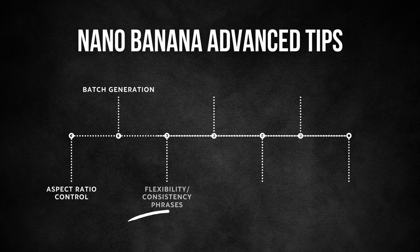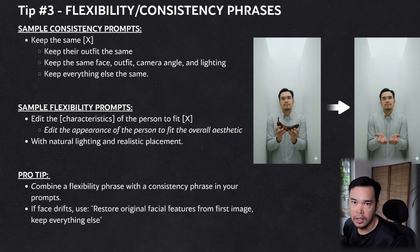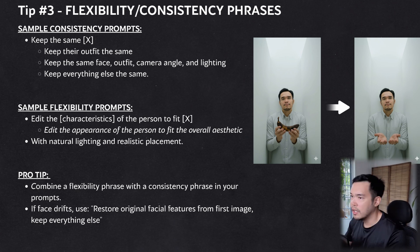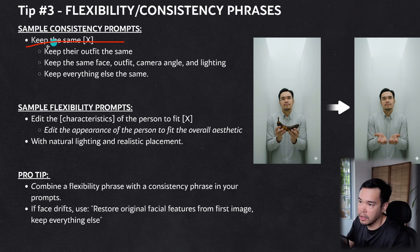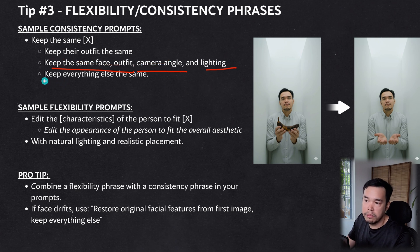Now that we've solved the efficiency problem, let's get into specific image editing tips for more flexibility, consistency, and control. Tip 3 is to use flexibility and consistency phrases. By consistency phrases I mean saying 'keep the same X' — like 'keep the same outfit,' 'keep the same face,' 'camera angle,' 'lighting,' or simply 'keep everything else the same.'